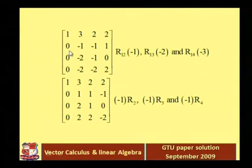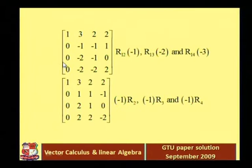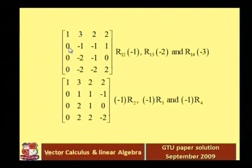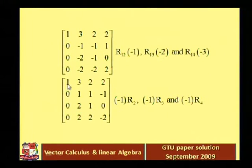So now the first row remains as is. The second row becomes 0, minus 1, minus 1, 1. Next, we multiply the second row by minus 1 to make the leading entry positive.